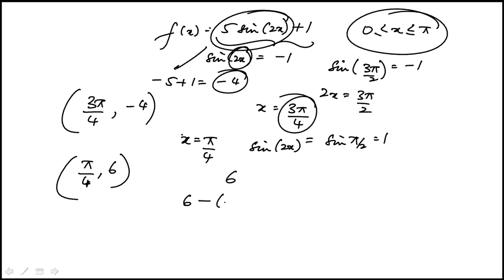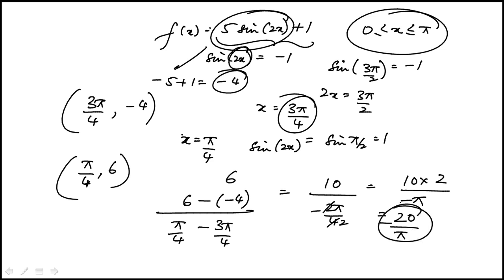To find the slope, difference in the y values over difference in the x values. So this is going to be 10 over minus 2π over 4. That becomes 2 over minus π. So this is 20 over π. And don't forget the minus. So the answer is minus 20 over π, which is choice A.